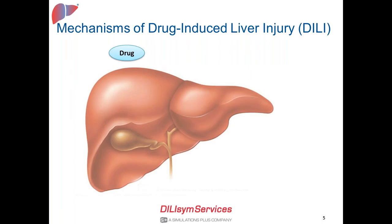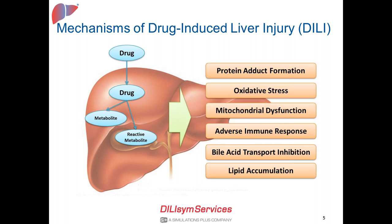There are several mechanisms underlying drug-induced liver injury. Drugs are taken into the liver, which is usually the major eliminating organ for drugs and metabolites. Whether drugs or their stable or reactive metabolites can form protein adducts or cause oxidative stress or mitochondrial dysfunction — there are several different mechanisms that can lead to DILI alone or in combination.